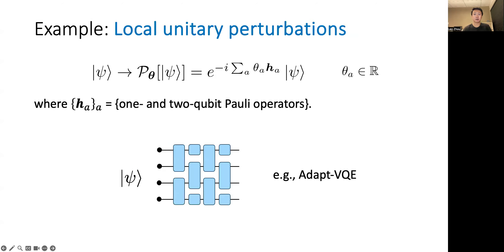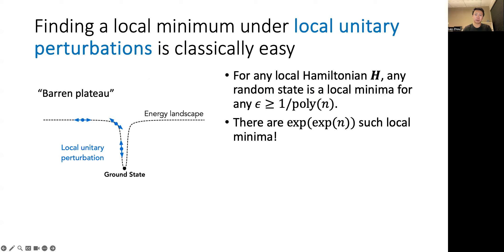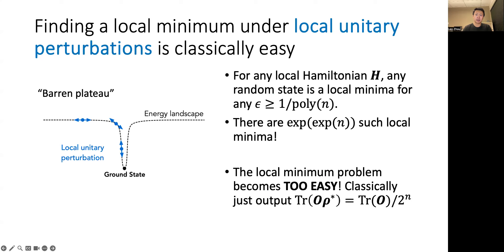As an example, let us first consider local minima of quantum systems under families of local unitary perturbations. Here, the perturbations are specified by short-time unitary evolutions generated by one or two qubit local operators. These perturbations are mathematically simple and are commonly considered in algorithms such as the adaptive variational quantum eigensolvers. However, the local minimum problem under these local unitary perturbations can be solved easily by classical computers, because for any local Hamiltonian, we can show that any random state is an approximate local minimum for any epsilon that you would care about. Consequently, for any local Hamiltonian, there are doubly exponentially many local minima in the energy landscape. In this case, the local minimum problem becomes too easy, and can be solved, for example, by simply outputting the observable expectation in the maximally mixed state, independent of the problem Hamiltonian.